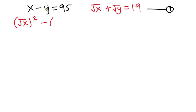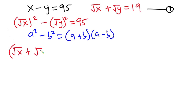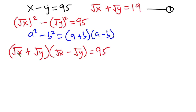From equation 1, I'll write x as square root of x to the power 2, minus y as square root of y to the power 2, equal to 95. Now, a squared minus b squared equals (a plus b)(a minus b) — this is the difference of two squares. So I'll express this as: square root of x plus square root of y, times square root of x minus square root of y, equals 95.